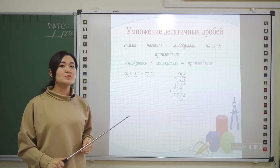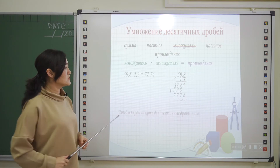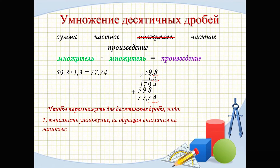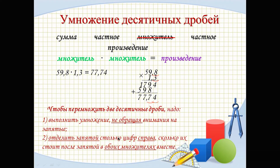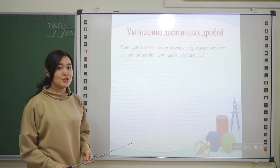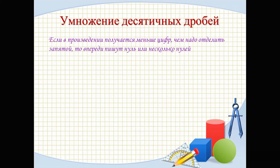Now let's formulate the rule for multiplying decimal fractions. To multiply decimal fractions: 1) multiply them ignoring the decimal point; 2) separate with a decimal point as many digits from the right as there are digits after the decimal point in both factors combined. If the product has fewer digits than needed, write one or more zeros at the front.